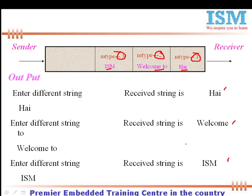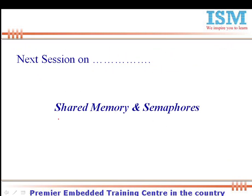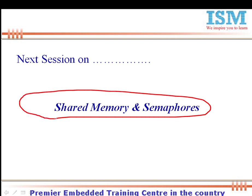I hope you have understood all the operations of pipes and message queues. Now let us look at how to run all these things on the system practically — we will see various things displayed when we call the `ipcs` command. After that, in the next session, let us continue our discussion on more IPC mechanisms like shared memories and semaphores.